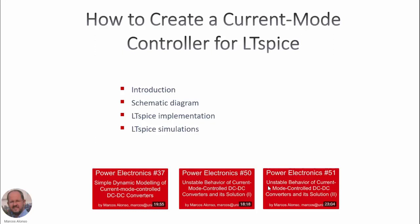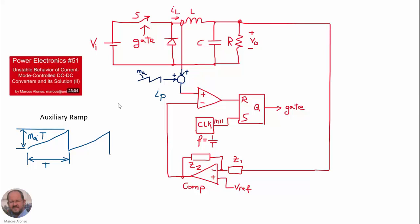This is the schematic of the current mode control that we have seen in Power Electronics number 51, in which we presented the buck converter. We are measuring the current through the inductor. We add an auxiliary ramp to the current through the inductor and send this into the comparator.